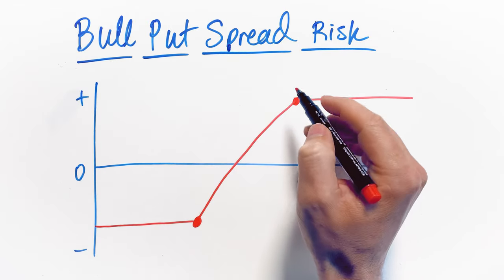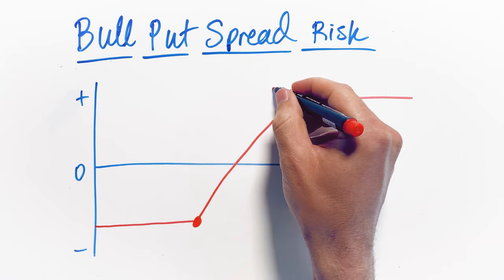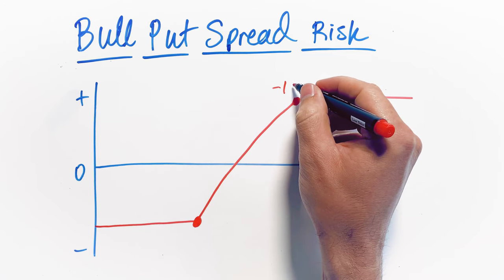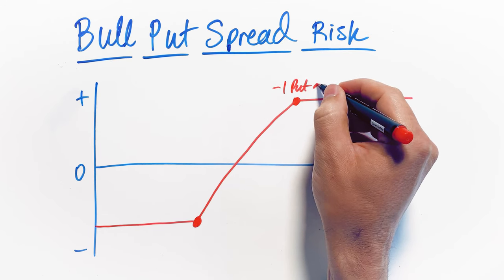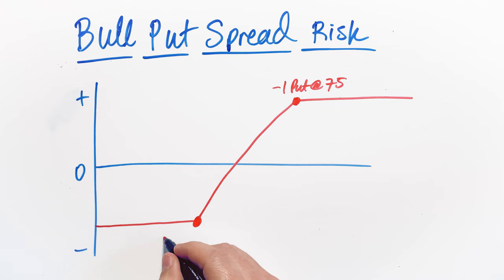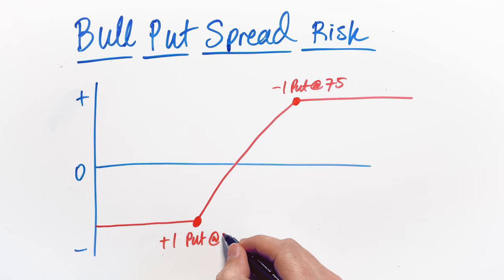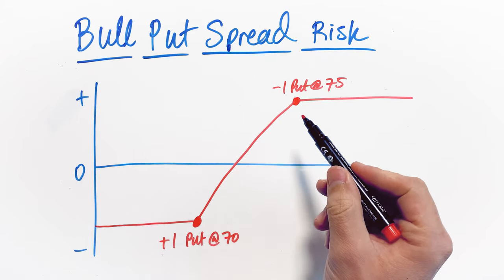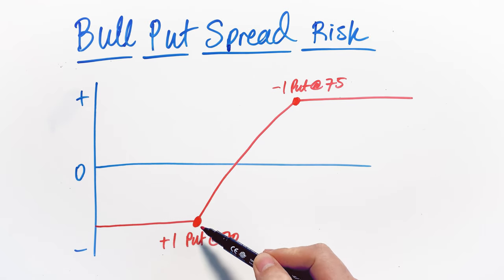In our example, we're going to look at one where we sell a put option. We're going to be negative one put option here at a strike price of $75. Then we're going to buy a put option down here, so plus one, buy a put option at a strike price of $70. This is a classic bull put spread where you're simply selling a put option, buying a put option at a lower strike price to give yourself defined profit and defined risk.